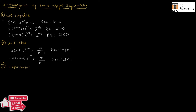Next let us see the exponential function. The exponential function can be represented as a to the power of n times U of n. If we perform Z-transform we get Z divided by Z minus a. Here ROC will be magnitude of Z greater than magnitude of a.